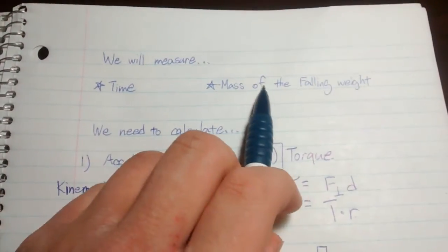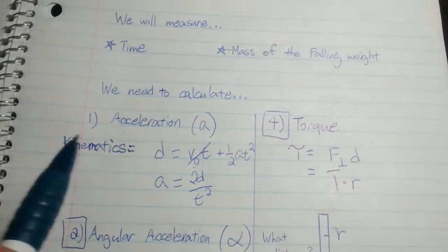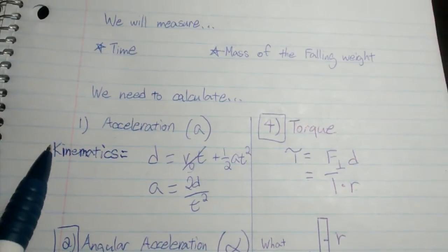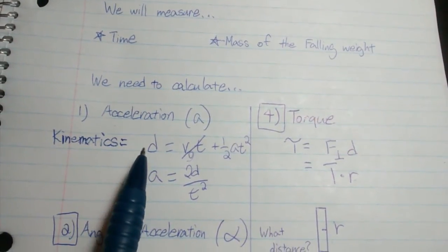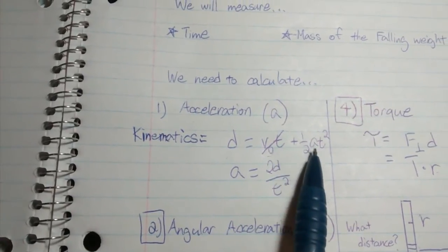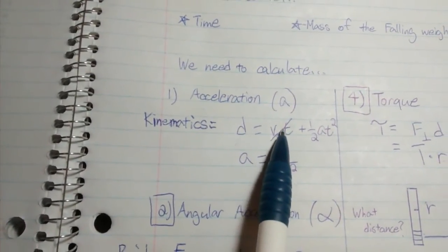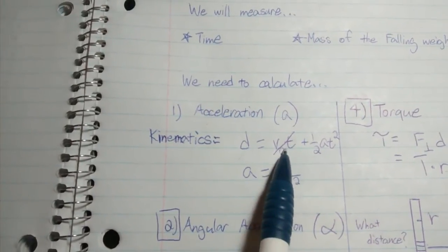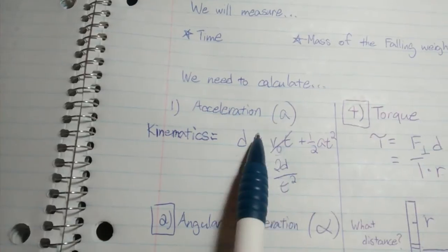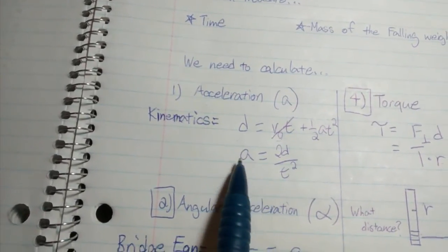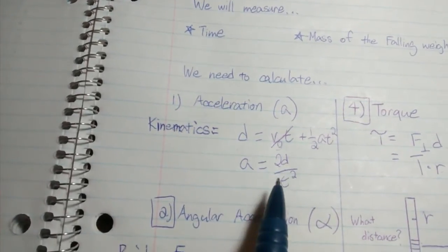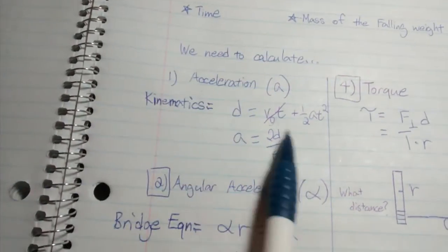We need to calculate acceleration (a). In kinematics, the equation is distance equals initial velocity times time plus one-half a t squared. The initial velocity is zero since the mass isn't moving at time zero, so that cancels out. If you rearrange, you get acceleration equals 2d over t squared. We know d equals 0.7 and you'll measure t.